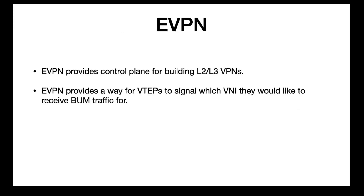Now let's talk about EVPN. EVPN provides a control plane for building Layer 2 and Layer 3 VPNs with VXLAN. You don't need EVPN to build a VXLAN deployment, but EVPN makes the deployment scale. EVPN also provides a way for VTEPs to signal which VNI they would like to receive BUM traffic for. When doing Head End Replication, you can either statically populate your flood list or use EVPN to do that signaling using EVPN route type 3. I'll be talking about EVPN route types in a subsequent slide.